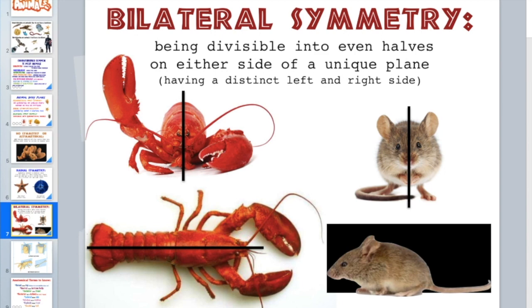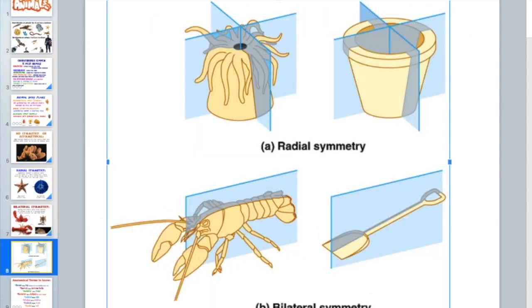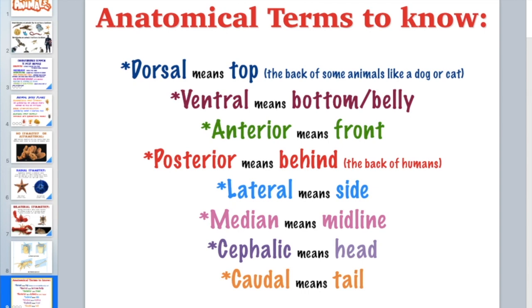Bilateral symmetry gives a mirror image of left and right. Looking at the top or front of a lobster, you can see it has a left and right side. This can be related to non-living objects: the sea anemone compares to a pot or cylindrical lamp for radial, while the crayfish — with bilateral symmetry — compares to a spoon, a shovel, or a car.